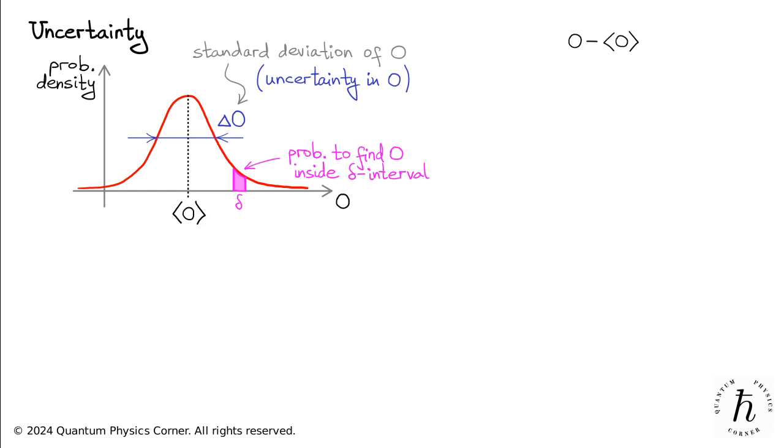However, this is not the case, as negative deviations cancel out positive ones, causing the average of O minus O mean to be small, even for very broad distributions. For instance, the average of O minus O mean is zero for any symmetric distribution, no matter how wide.